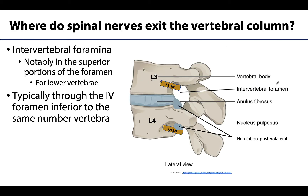Let's get an idea of where spinal nerves are exiting the vertebral column. Those spinal nerves, or specifically those spinal nerve trunks in their primary rami, are going to exit through the intervertebral foramina. Recall that is going to be that inferior notch with that superior notch creating this foramen, and in the lower portions of the vertebral column, the spinal nerves will notably exit in the superior portions of the foramen.